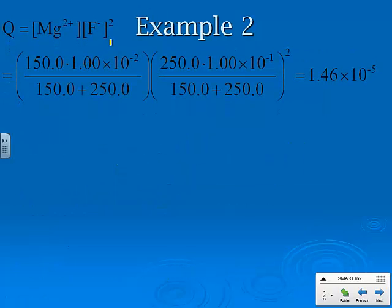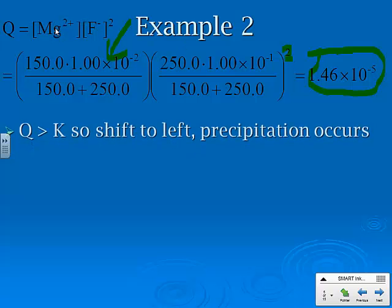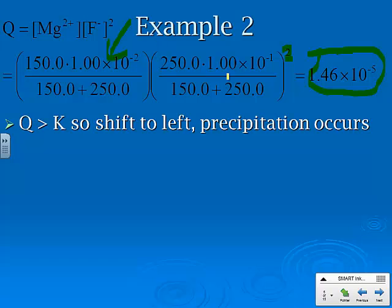So again, we've got to find Q and compare it to K. Here's our calculation for our Q values. I know this looks kind of like ugly math, but this is the volume times the molarity, and you have over the new total volume. So that gives us a Q value of 1.46 times 10 to the negative 5th. Remember, this one is raised to the second power because you get two fluoride ions for every one magnesium. Q is greater than K, so it will shift left, so the precipitation does occur.